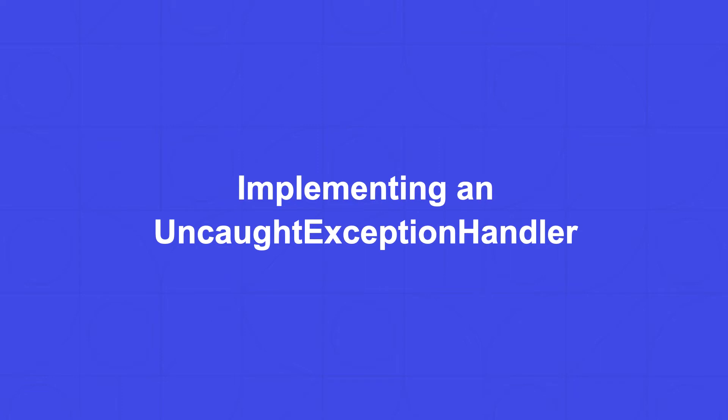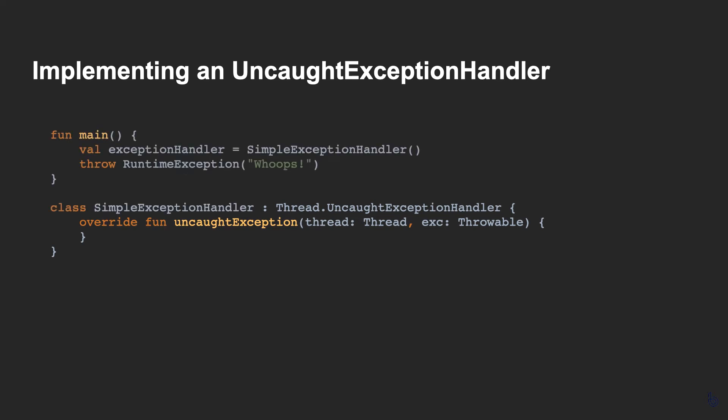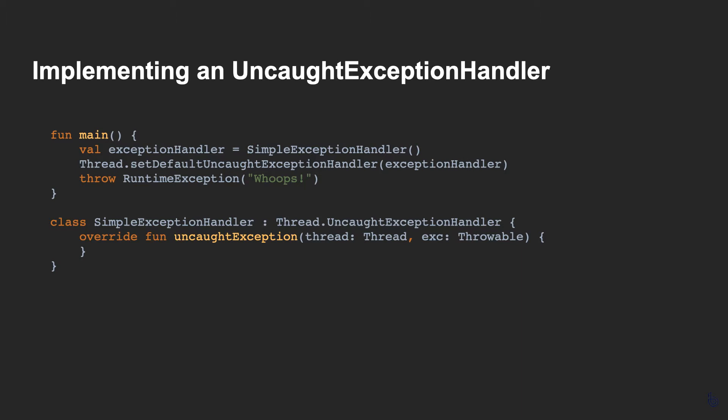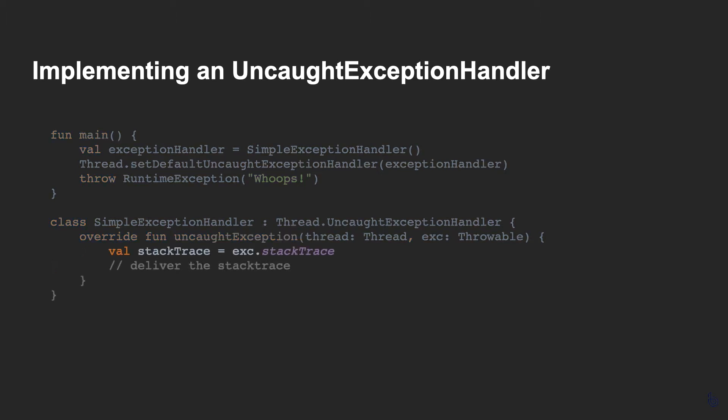On Android, for a JVM crash reporting SDK you'd want to implement an UncaughtExceptionHandler, which looks a little like this. We have a simple exception handler which implements the UncaughtExceptionHandler interface. Within that interface there's just one method — uncaughtException — and this is basically invoked whenever there's an uncaught exception in program execution. To set a handler for whenever that occurred we would call Thread.setDefaultUncaughtExceptionHandler and then our handler is what will be invoked. The next step would be to grab a stack trace in our handler and do something useful with it rather than just log it out.